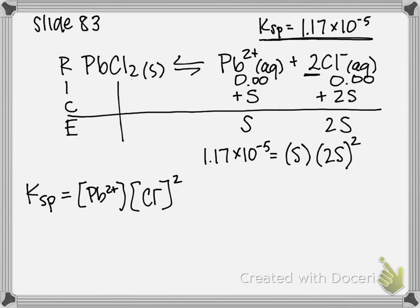And so I can write that 1.17 times 10 to the negative 5 is equal to S times 2S. And that's going to be squared, because remember in our expression, Cl minus is also squared.